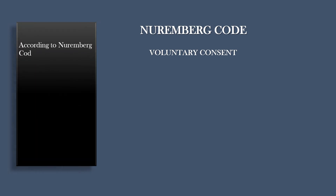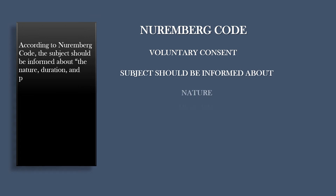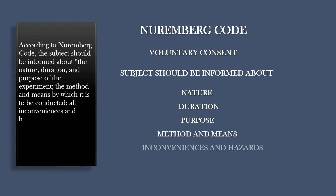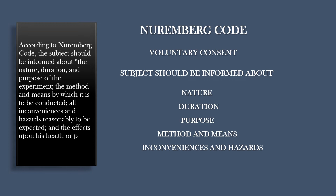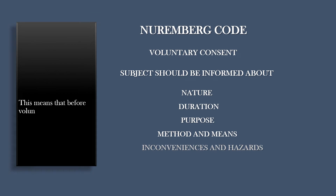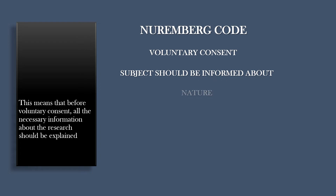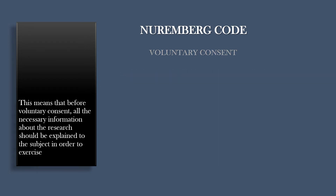According to the Nuremberg Code, the subject should be informed about the nature, duration, and purpose of the experiment; the method and means by which it is to be conducted; all inconveniences and hazards reasonably to be expected; and the effects upon his health or person which may possibly come from his participation in the experiment. This means that before voluntary consent, all necessary information about the research should be explained to the subject in order to exercise the free power of choice.